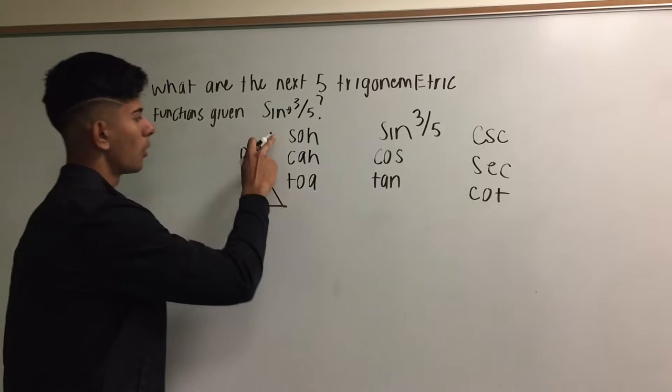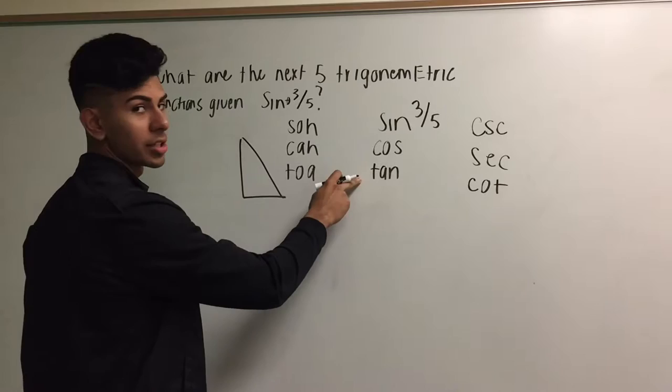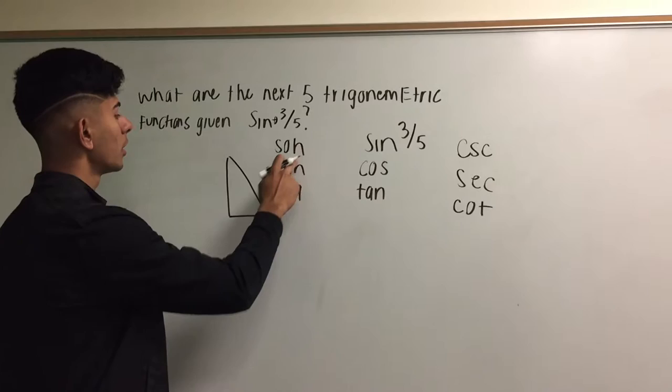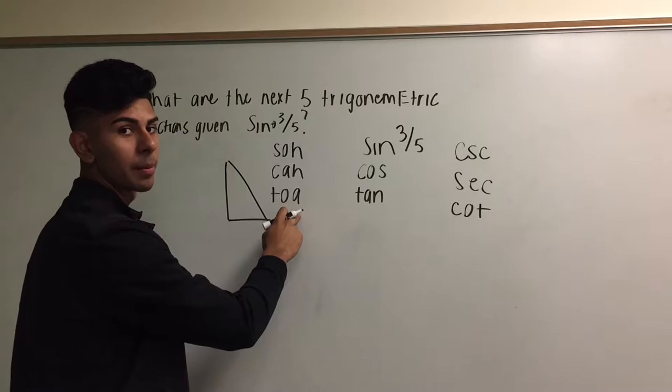SOHCAHTOA. Where the S represents the sine, C represents the cosine, and T represents the tangent. O and H, AH and OA represent the different sides of the triangle. So for SO, it would be opposite over hypotenuse. For cosine, it would be adjacent over hypotenuse. And the tangent would be opposite over adjacent.